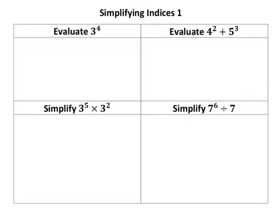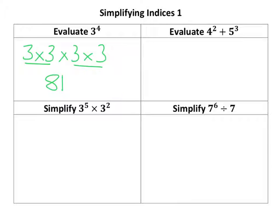So if I'm asked to evaluate 3 to the 4, it means I need to actually work it out. 3 to the power of 4 means 3 times 3 times 3 times 3 — so four 3s are multiplied together. That's one you should memorise: it's 81. 3 times 3 is 9, and 9 times 9 is 81.